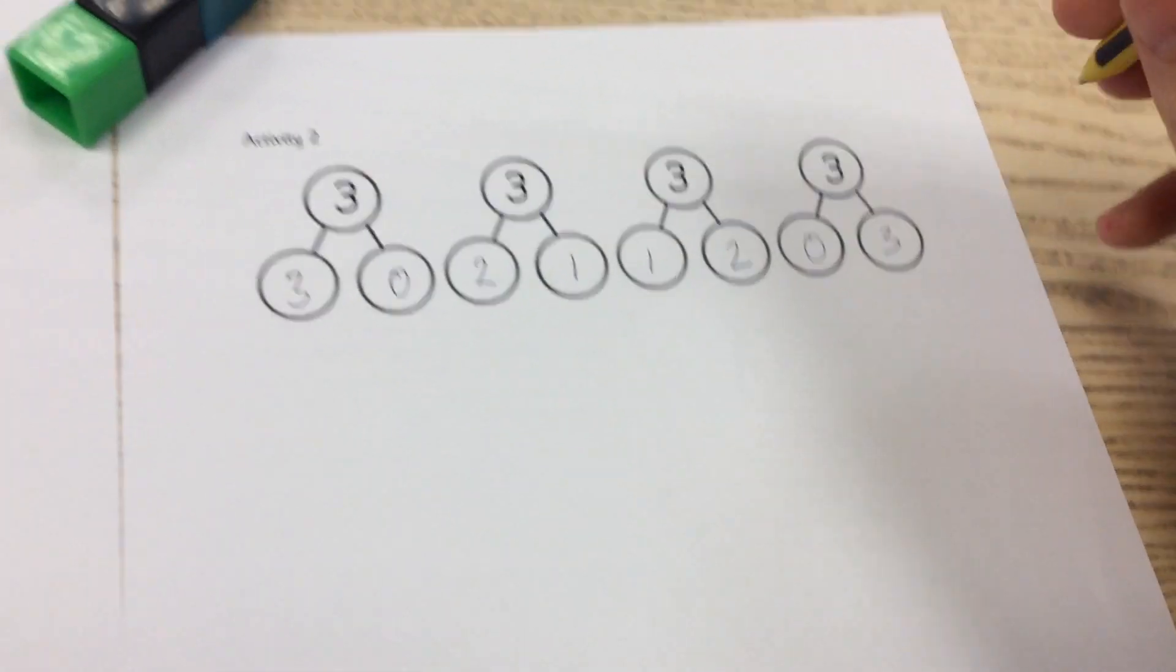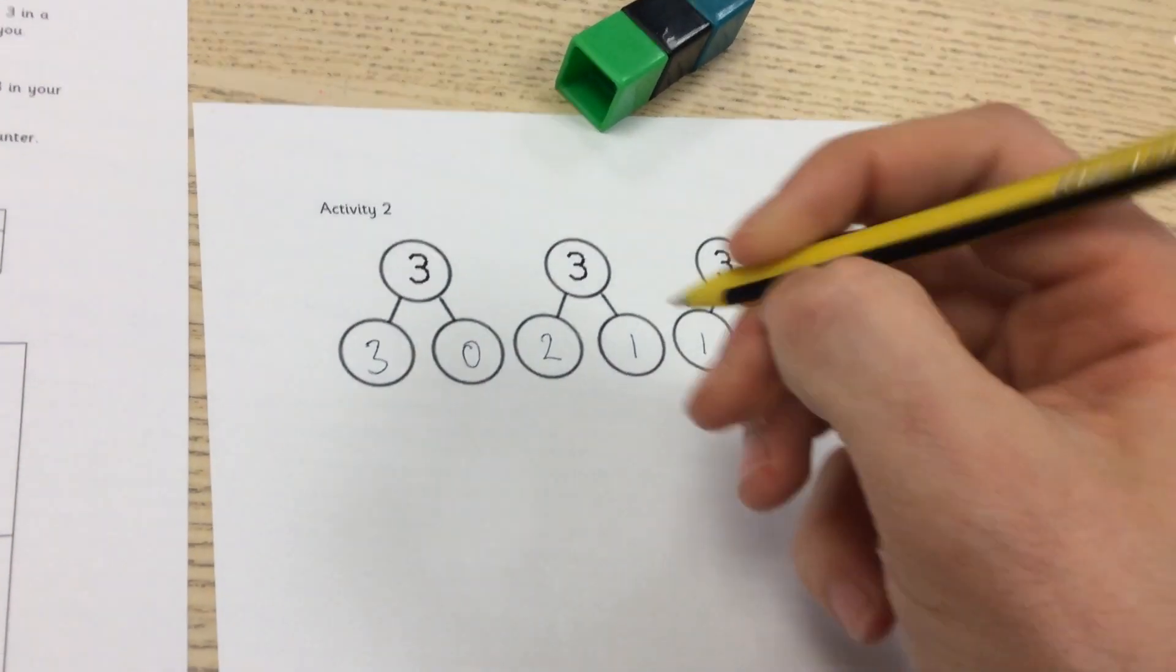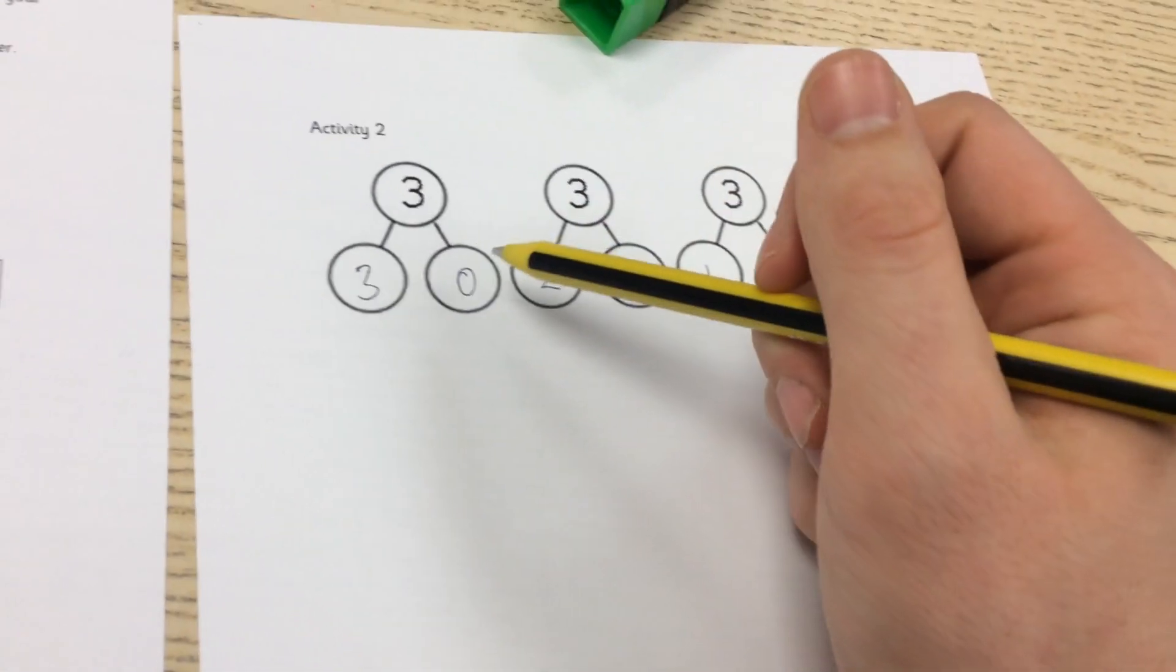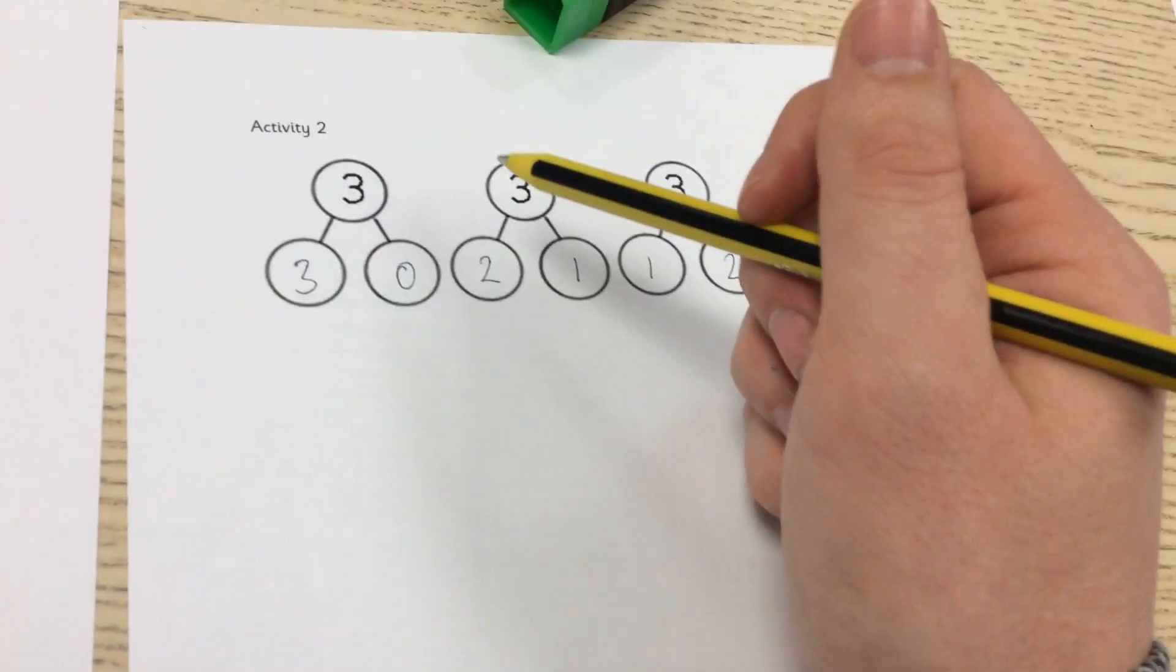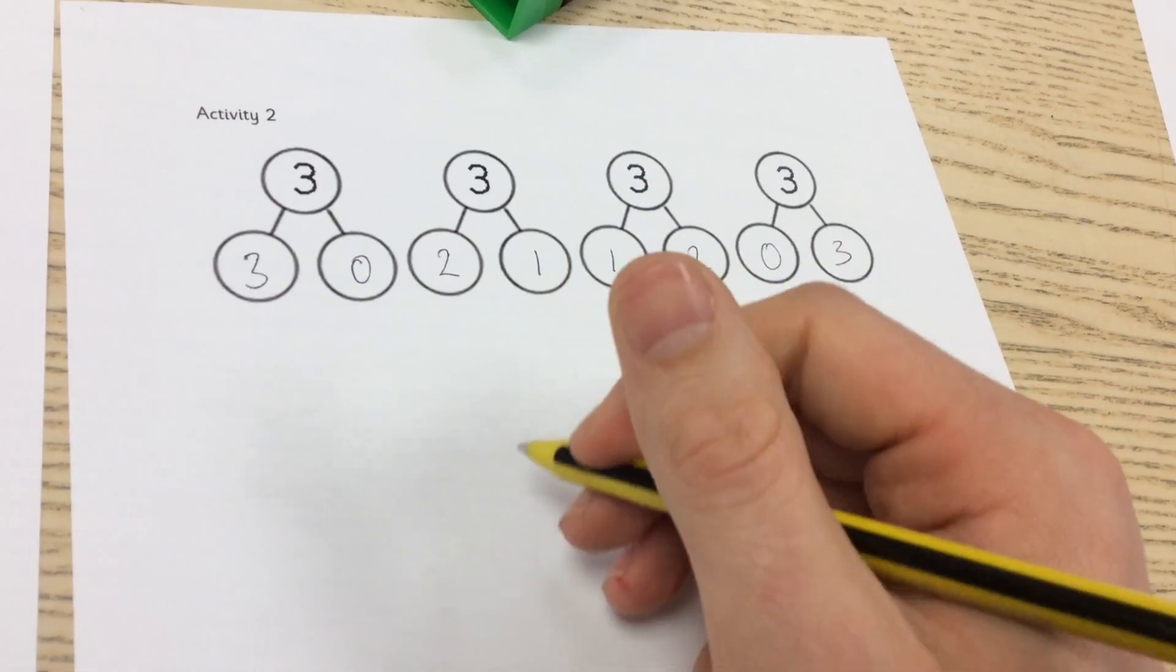Now for activity 3 you can use the unifix to help you. It's to record subtraction number sentences. I just said that it was a good reason for the part-whole model to stay the same because you can actually use that as well.